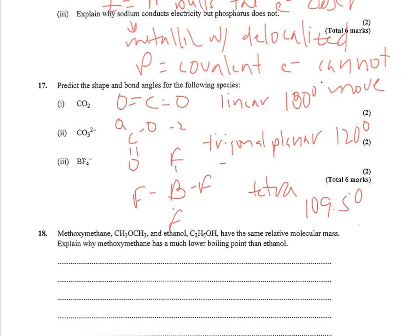And number 18, methoxymethane, CH3OCH3, and ethanol, CH3CH2OH, have the same relative molecular mass. So they weigh about the same. And yet, methoxymethane has a much lower boiling point than ethanol. So mass isn't a factor. So what is? Well, it's all about how this oxygen is bonded.